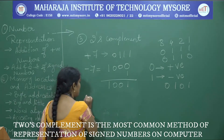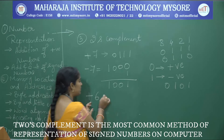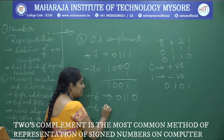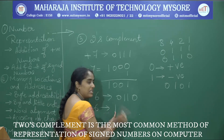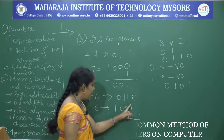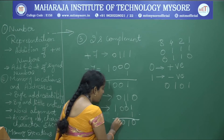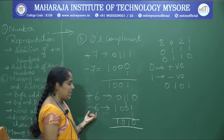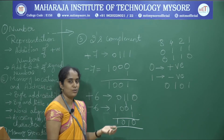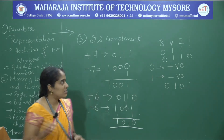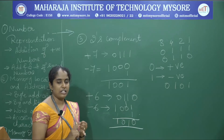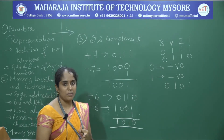For plus 6, it is 0110. For minus 6, take the one's complement: 1001, then add 1. The result is 1010, which is minus 6 in two's complement representation. Likewise, you can compute plus 5, plus 4, plus 2 and so on. This covers number representation using three systems: sign and magnitude, one's complement, and two's complement. For positive numbers the representation is the same in all three; for negative numbers it differs.